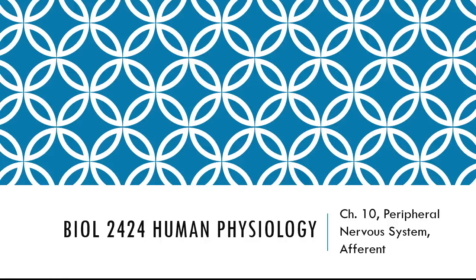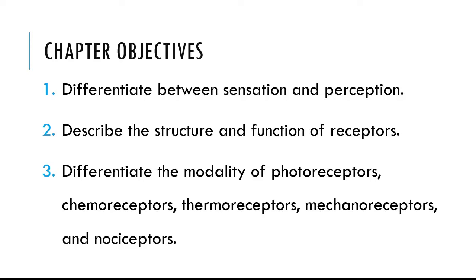We are going to transition into the peripheral nervous system. We're going to first address the afferent subdivision, or sensory subdivision. So in chapter 10, the things or topics that we want to address is we're going to start out by differentiating between sensation and perception.